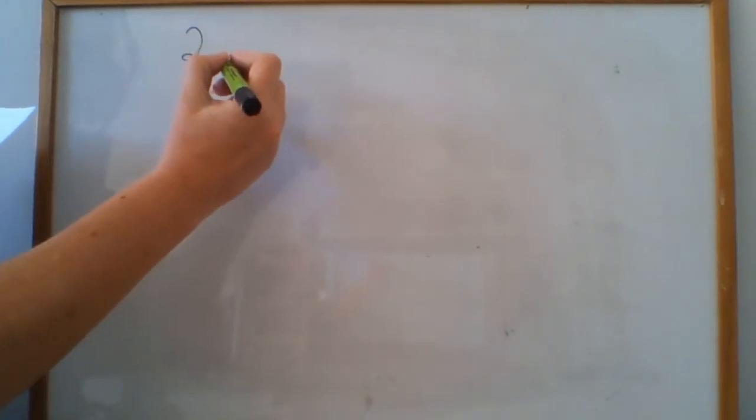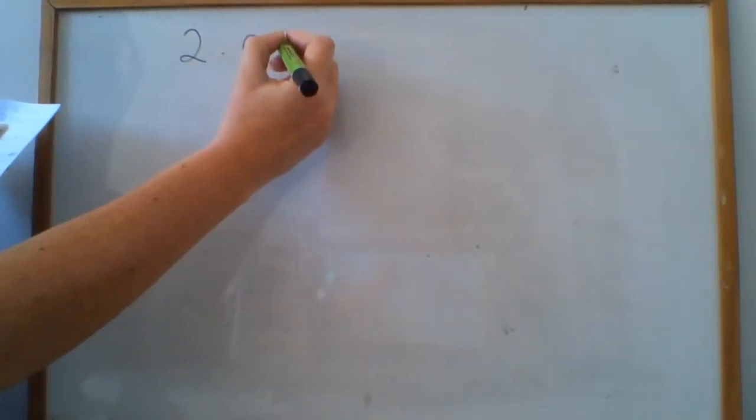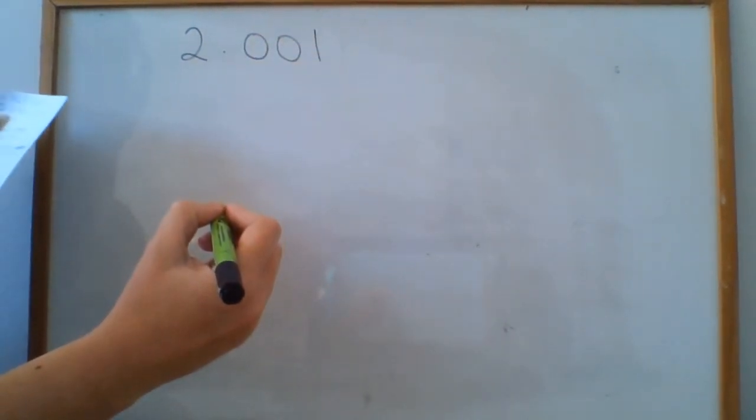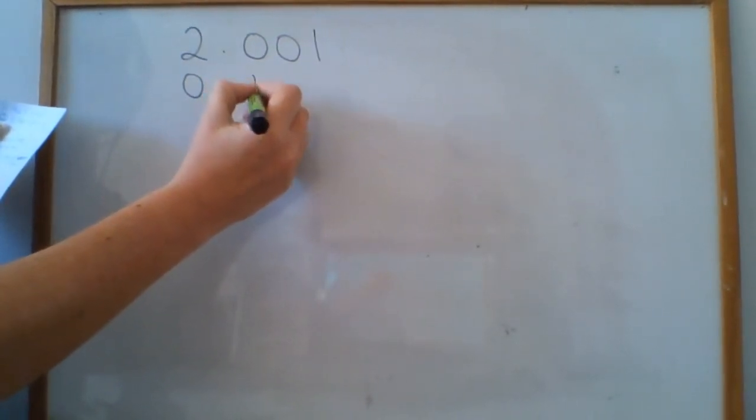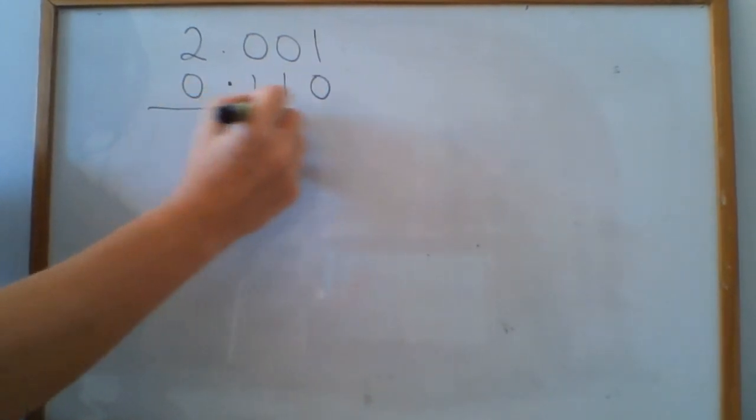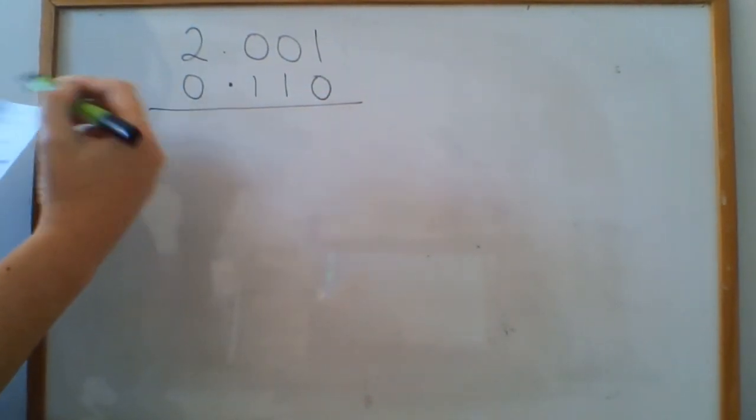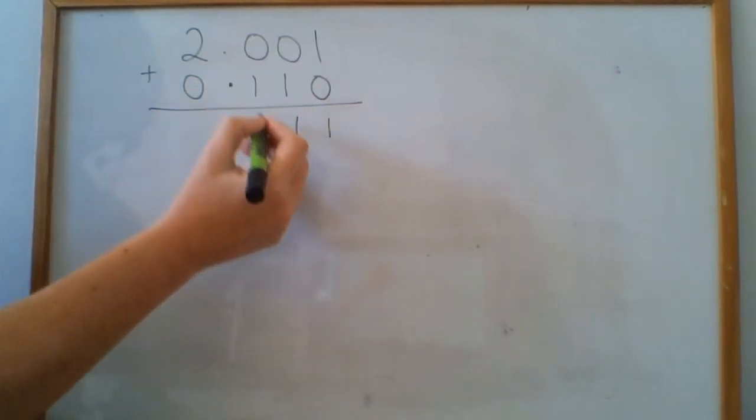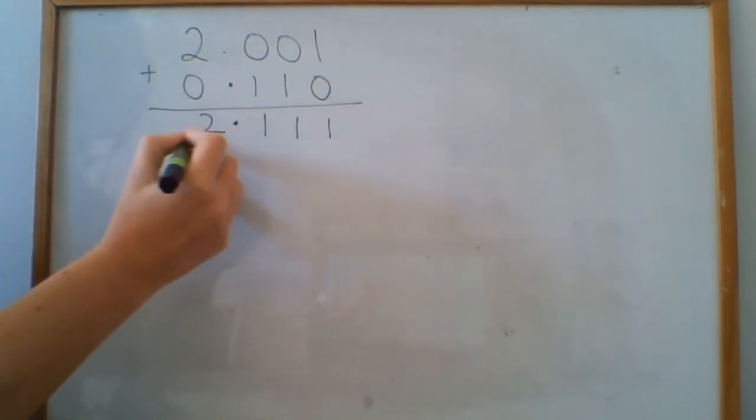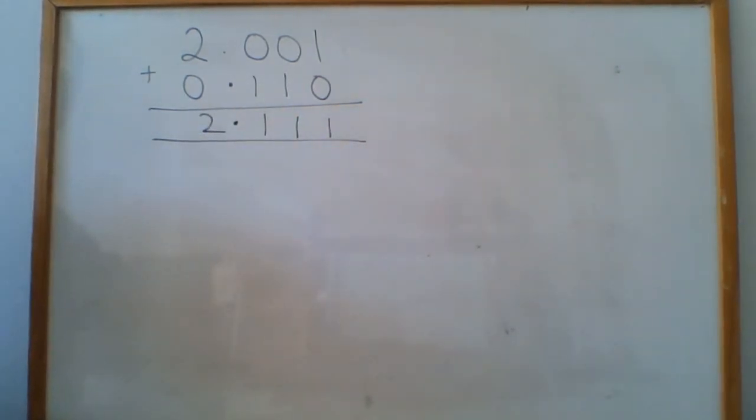Number two, 2.001 plus 0.11. The most important thing about doing this calculation is making sure that you line up your decimal point and your columns correctly. So you've got 2.001 plus 0.11. And then I can add a placeholder to help me check what my operation was. It's an addition, make sure you don't take it away. 1 plus 0 is 1, 0 plus 1 is 1, 0 plus 1 is 1. Then my decimal down, 2 plus 0 is 2. So your answer for number two is 2.111. That one should be quite straightforward as long as you remember to line everything up correctly.